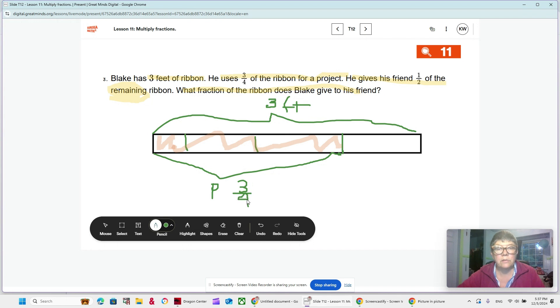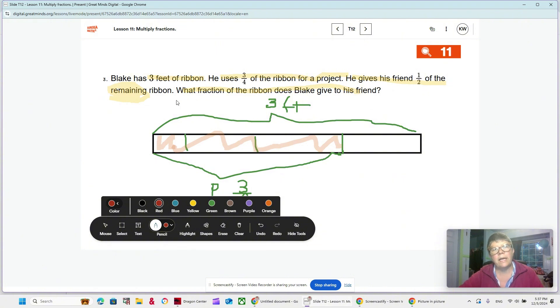Now, we don't have to figure out what's three-fourths of three feet. They're not asking us that. They're asking us, what fraction does Blake give to his friend? So, let's get a different color here. He gives one-half of the remaining. You see the remaining here? This is what's left over, just this one-fourth over here. But he doesn't give the whole thing. He gives half of it.